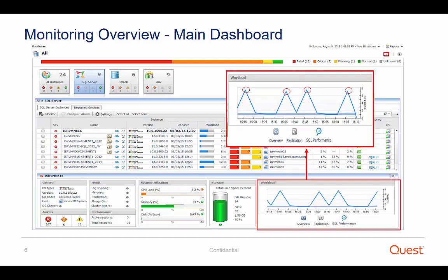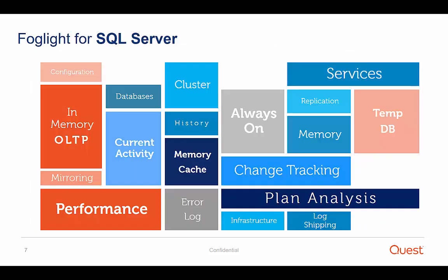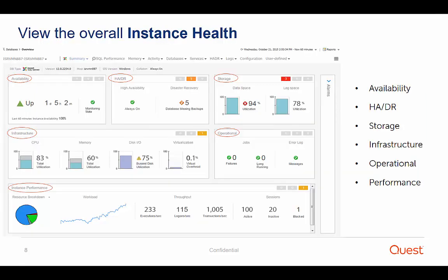Additionally, you can easily understand whether your instance workload is within the expected profile. Foglight for SQL Server has rich monitoring coverage, covering high availability architectures and disaster recovery solutions, monitoring different storage aspects, up-to-date with recent technologies including SQL Server on Linux, and providing both real-time and historical views. The SQL Server Overview dashboard is the starting point for getting to the root cause of an issue, as it covers all aspects of instance health at a glance.